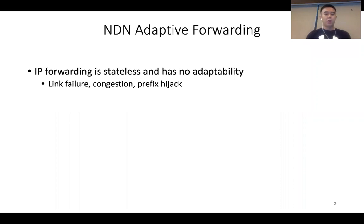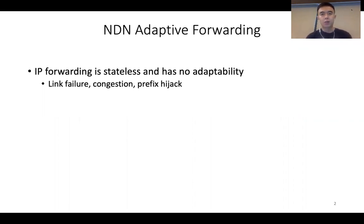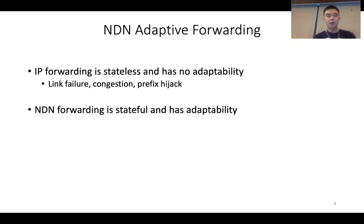The current IP architecture's forwarding plane is stateless and has no adaptability. There are several cases where the forwarding plane does not help much, like link failure, congestion, and prefix hijack. It heavily relies on the routing protocol or the end host to handle these cases. But NDN forwarding can do much better because it's stateful and has adaptability.